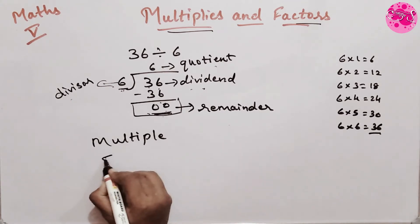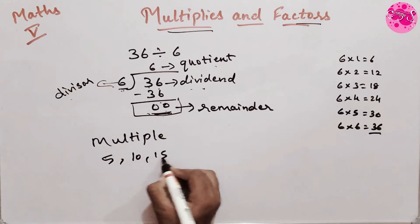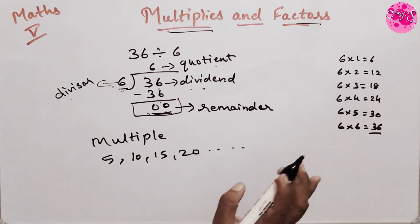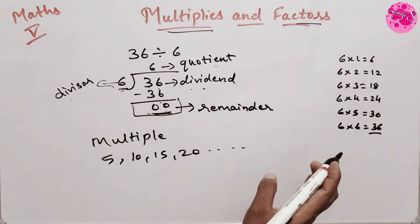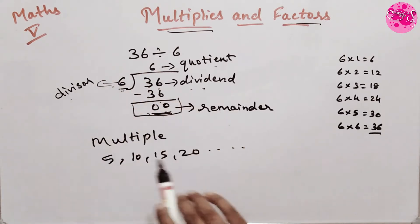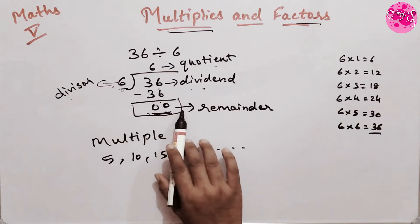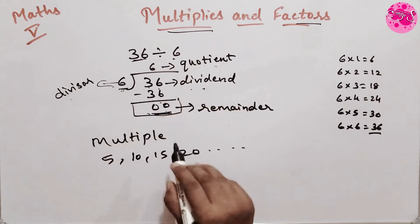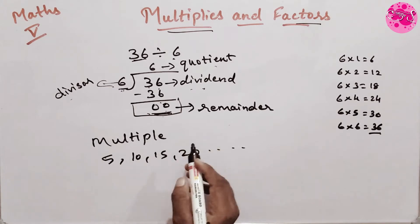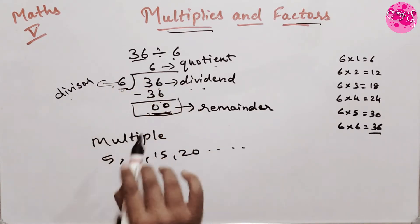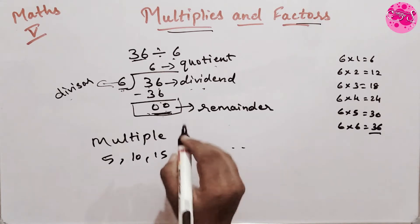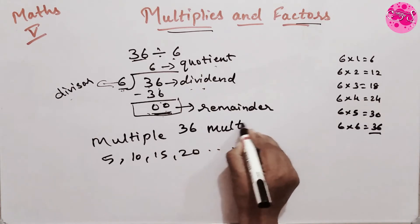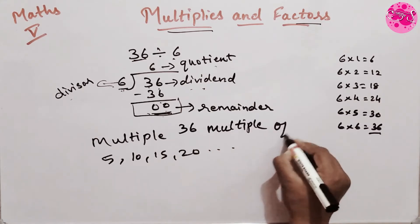For example, 5, 10, 15, 20 and so on are the multiples of the number 5. So in this question we can say that the number 36 is a multiple of 6.